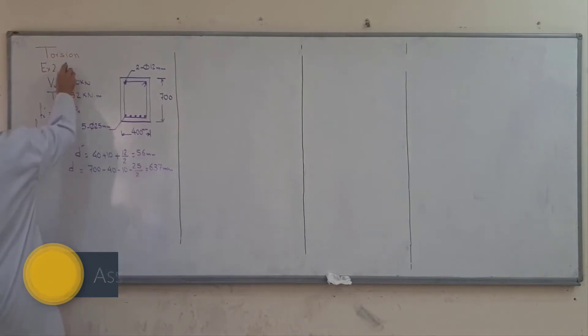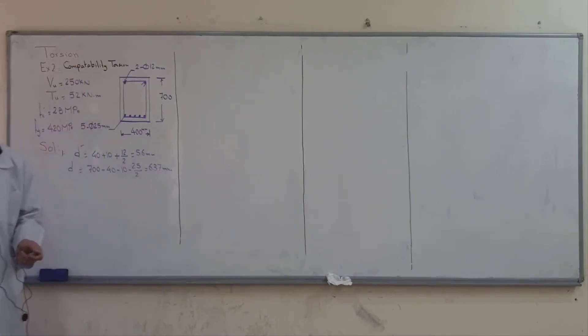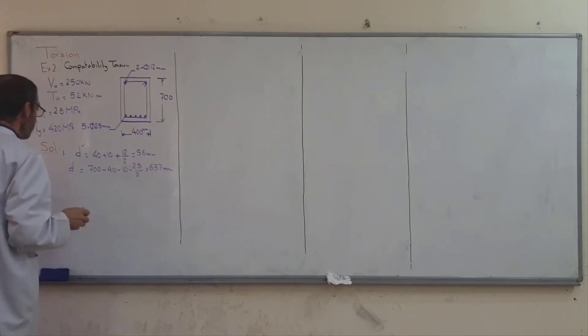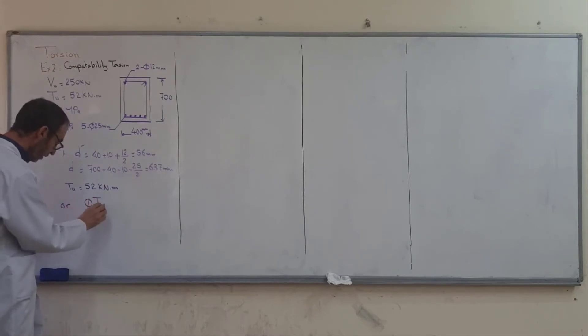With compatibility torsion, we can either use TU equal to 52 kNm, or we can use phi t crack.